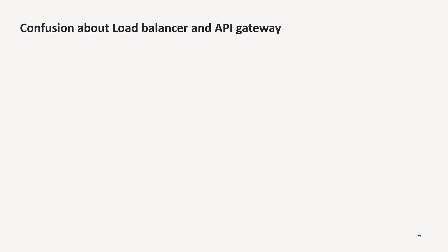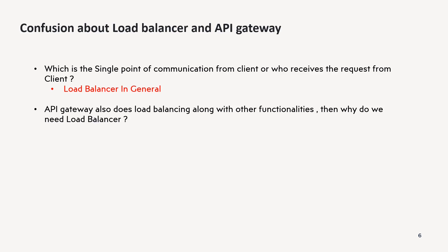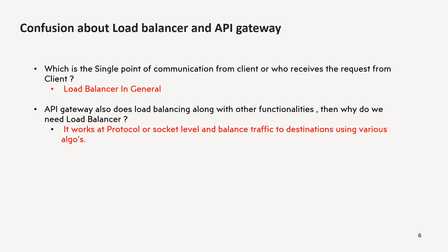Now let us answer the questions raised earlier. First: which is the single point of communication from the client? It is not a hard and fast rule, but in general the load balancer is the first point of contact, because traffic coming to the application needs to be distributed to the various servers or clusters first — so the load balancer is the first point of contact for client requests.